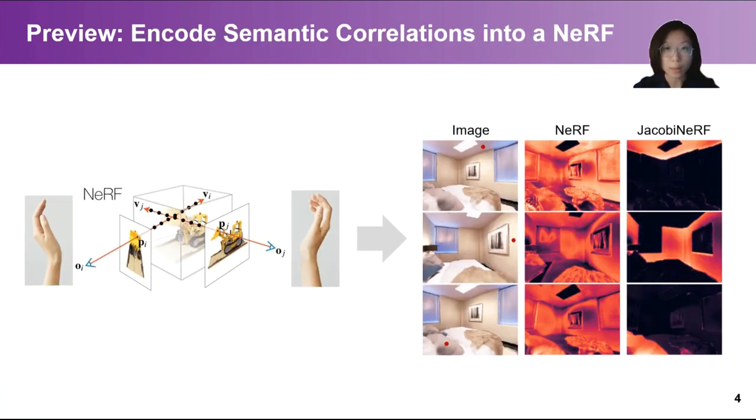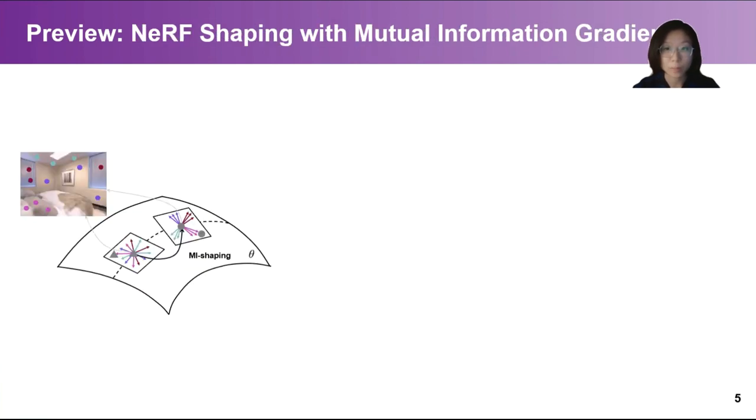So, how can we train a NERF to reconstruct the scene and at the same time ensure that the trained network can exhibit the desired resonance between correlated points when a perturbation is made?